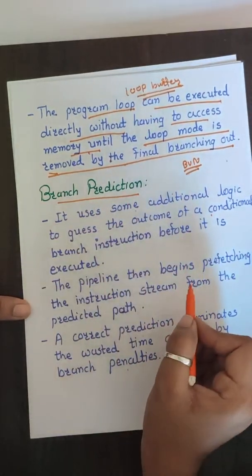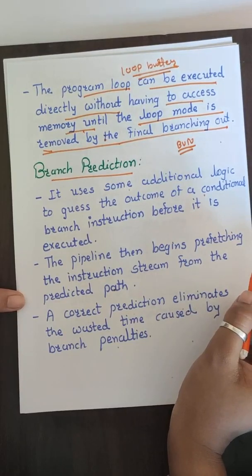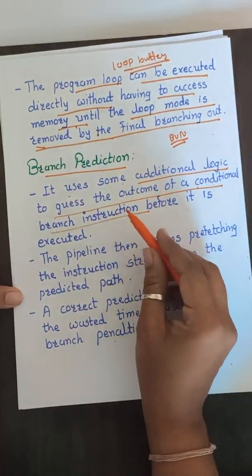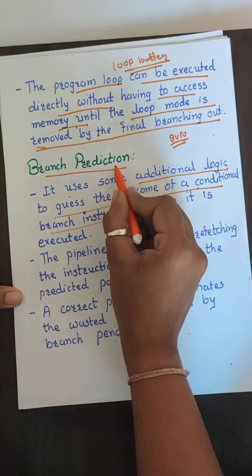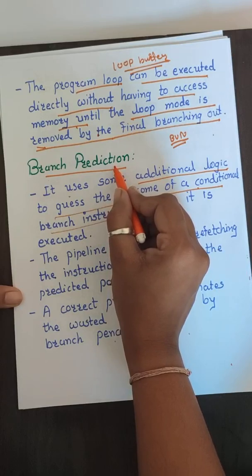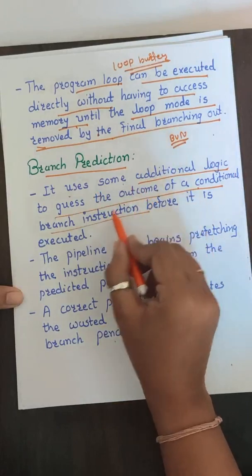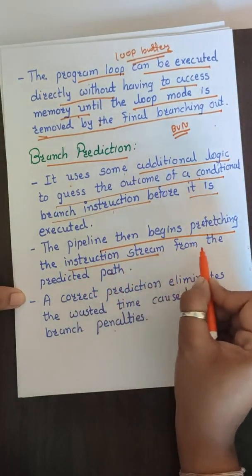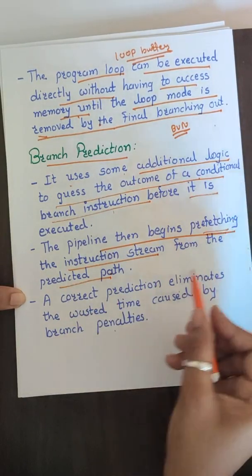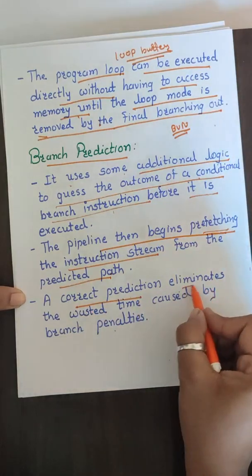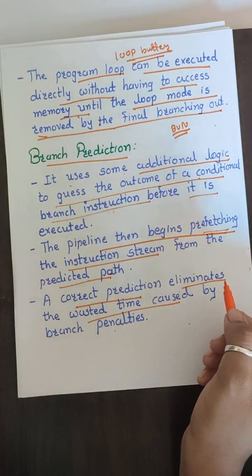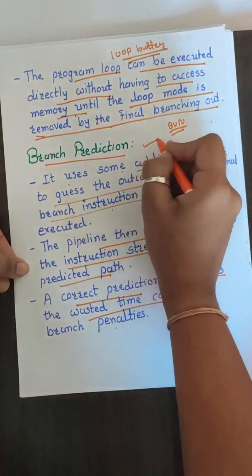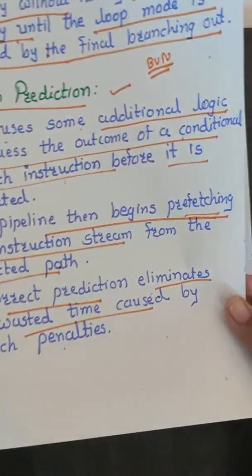Another option is branch prediction. It uses additional logic to guess the outcome of a conditional branch before it is executed — it is essentially a blind guess. The pipeline then pre-fetches the instruction stream for the predicted path. If the prediction is correct, it eliminates wasted time. Otherwise it reverts to the conventional approach. However, it is not 100% reliable because we cannot predict the entire behavior of the program.